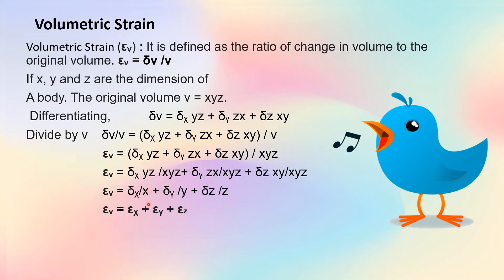Now, delta X upon X is strain in the X direction (epsilon X), delta Y upon Y is strain in the Y direction (epsilon Y), and delta Z upon Z is strain in the Z direction (epsilon Z). So volumetric strain epsilon V equals epsilon X plus epsilon Y plus epsilon Z. There are two formulas: first, delta V upon V; second, epsilon X plus epsilon Y plus epsilon Z.